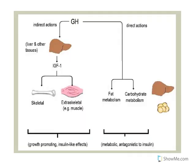Let's look at the indirect actions of growth hormone. Growth hormone targets the liver and other tissues to produce IGF-1, which then finds its receptor on various targets and has growth-promoting effects. On the skeletal system, it increases bone growth — specifically linear growth, getting longer, and appositional growth.